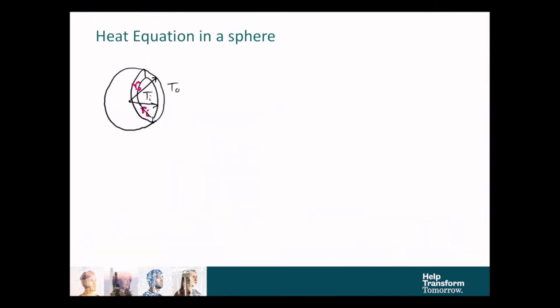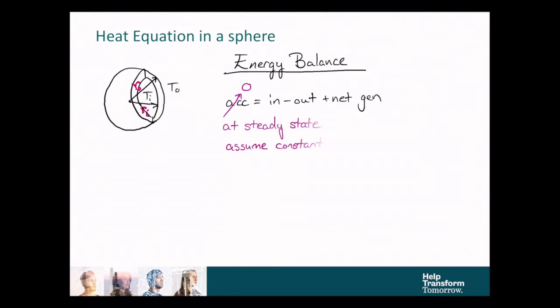Next, we need to calculate the heat equation in a sphere, and this will enable us to calculate temperature profiles in the radial direction. So we start with the energy balance, and we'll assume that this is steady state, so there's no accumulation term. We only have in, out, and net generation. And we'll also assume that the generation is constant with a value of qv.